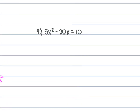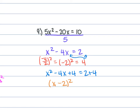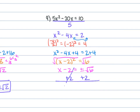For problem 9, we have 5x squared minus 20x equals 10. Divide everything by 5: x squared minus 4x equals 2. b is negative 4, so negative 4 over 2 squared is negative 2 squared, which is 4. Add 4 to both sides: x squared minus 4x plus 4 equals 2 plus 4. Factor: x minus 2 squared equals 6. Take the square root: x minus 2 equals plus or minus the square root of 6. Add 2: x equals 2 plus or minus the square root of 6.